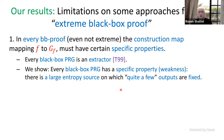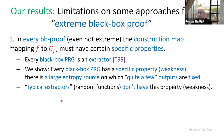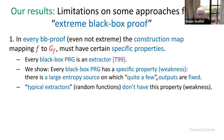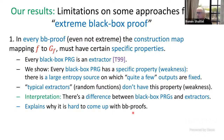The property is: when you think of a black-box pseudo-random generator as an extractor, there is a large entropy source on which quite a few outputs of this extractor are fixed. Typical extractors do not have this property — if you choose a function at random, with high probability it will be an extractor but unlikely to have this weakness. We interpret this as a difference between black-box pseudo-random generators and extractors, which may explain why it's hard to come up with new black-box proofs.